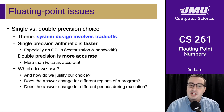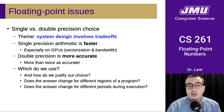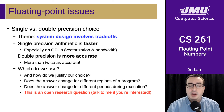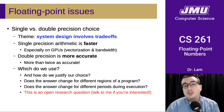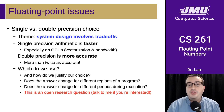An even more interesting variant of this question: does the answer change for different regions of a program? Maybe you can run most of your program in single precision if you run just one function in double precision. Does the answer also change for different periods of execution? Maybe in a long-running loop you can run most iterations in single precision and just a few in double precision at the end. This is actually an open research question that many people have worked on over the past decade. We've developed interesting tools to help programmers determine where they can use lower precision without sacrificing accuracy. This is the area where I've done much of my own research, so if any of this sounds interesting, please feel free to come talk to me — I'd love to get students involved in cutting-edge research in this area of computer systems.